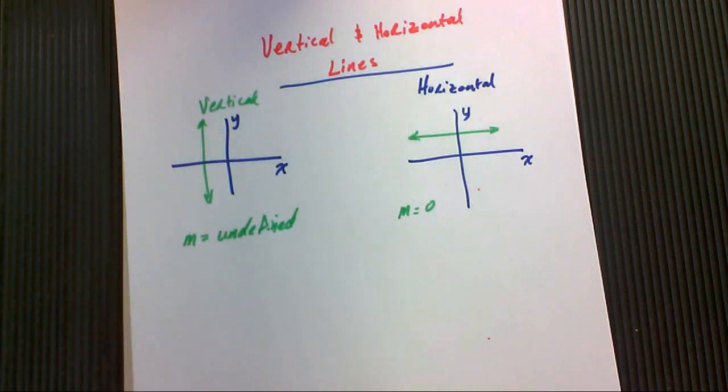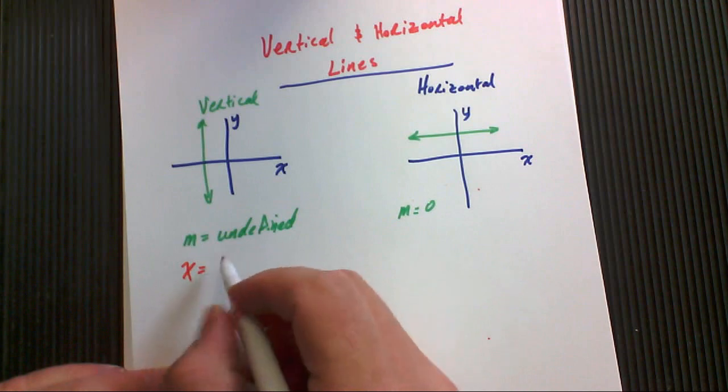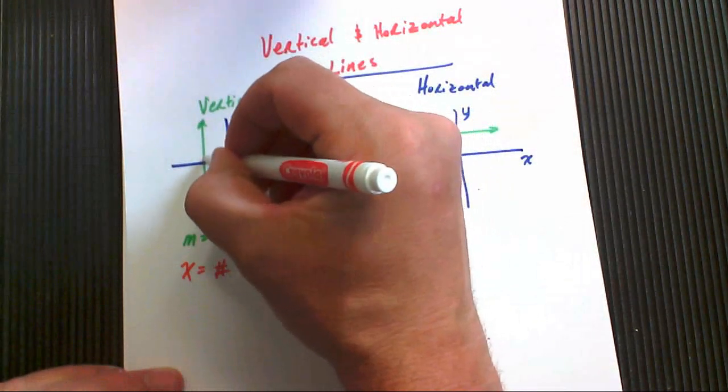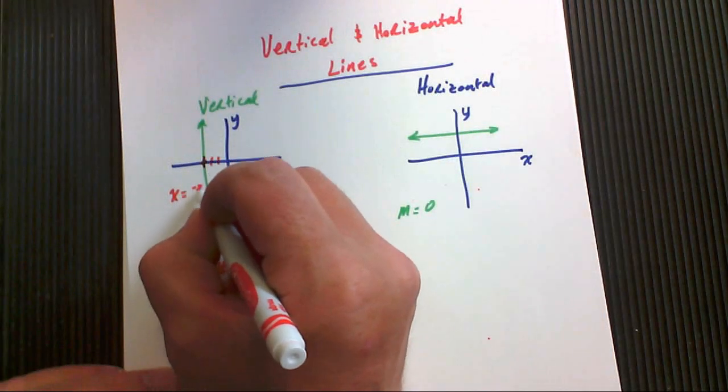A couple more pieces of information here. Vertical lines, they will always have an equation that looks like x equals some number. So for example, this one here, if this was negative three, the equation of this line would be x equals negative three.